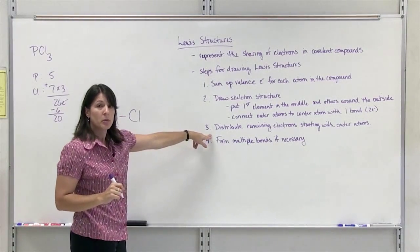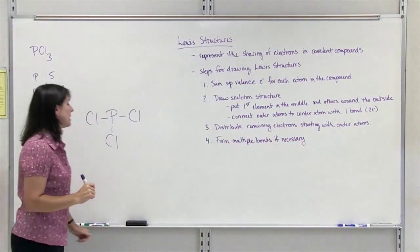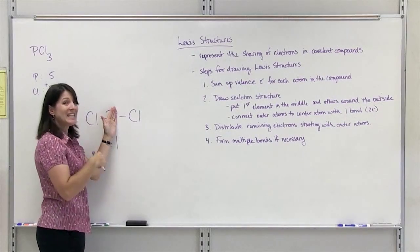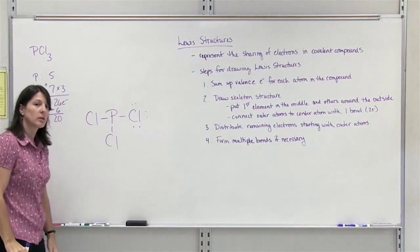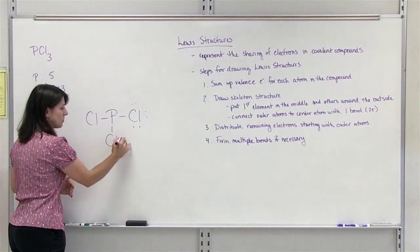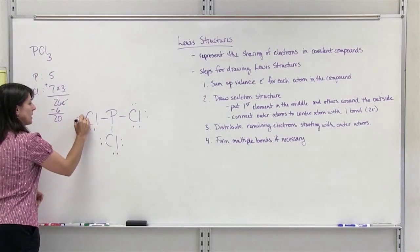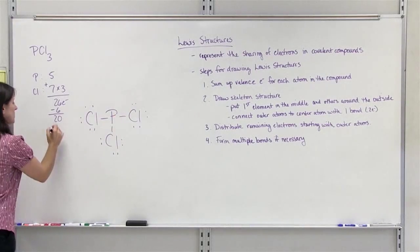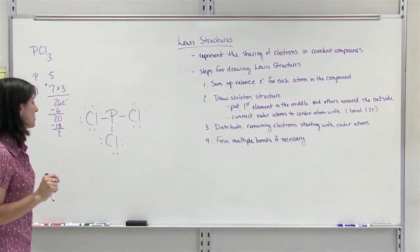Third step: distribute the electrons, starting with the outer atoms. Each chlorine atom already has 2 electrons from the bond, so it needs 6 more to complete its octet. We add 6 more to each chlorine. Doing this for all three chlorines uses 6, 12, 18 electrons. We have 2 remaining electrons.